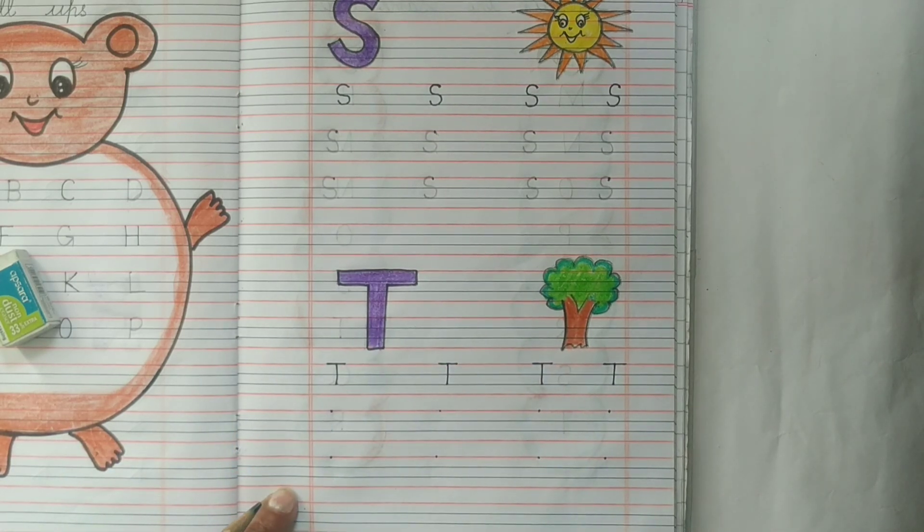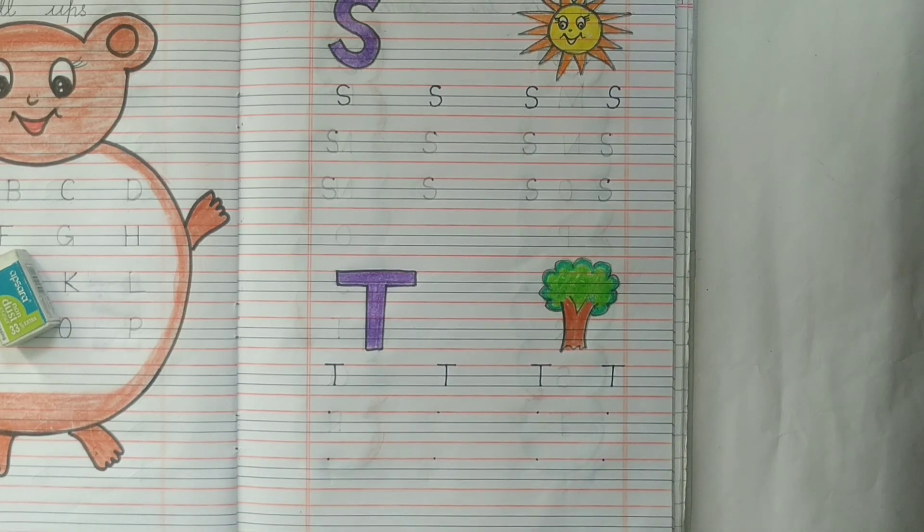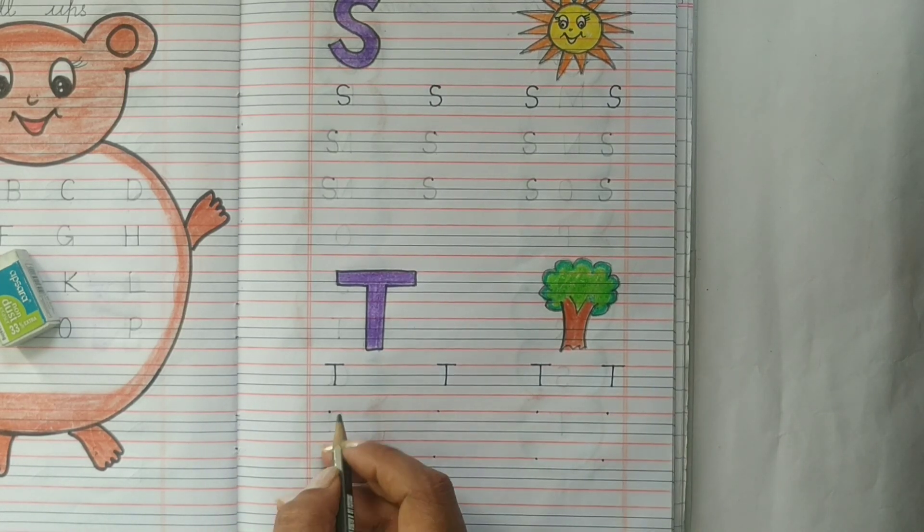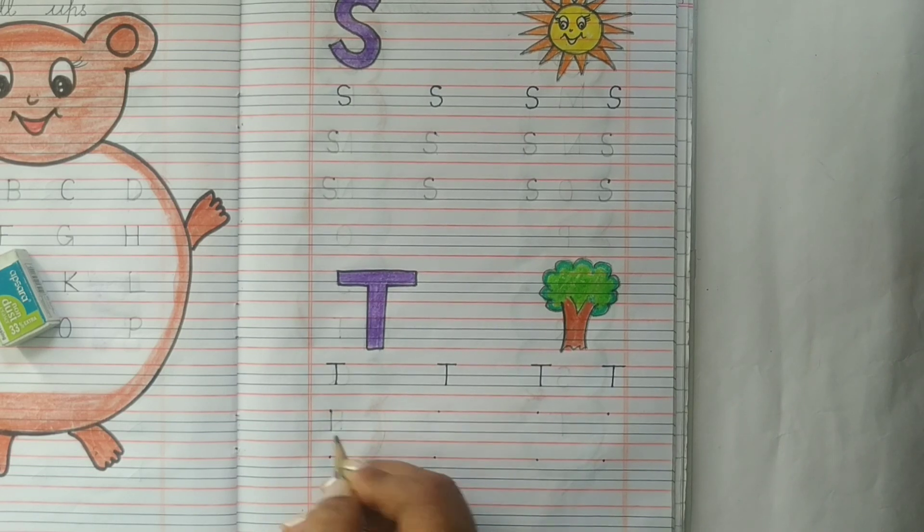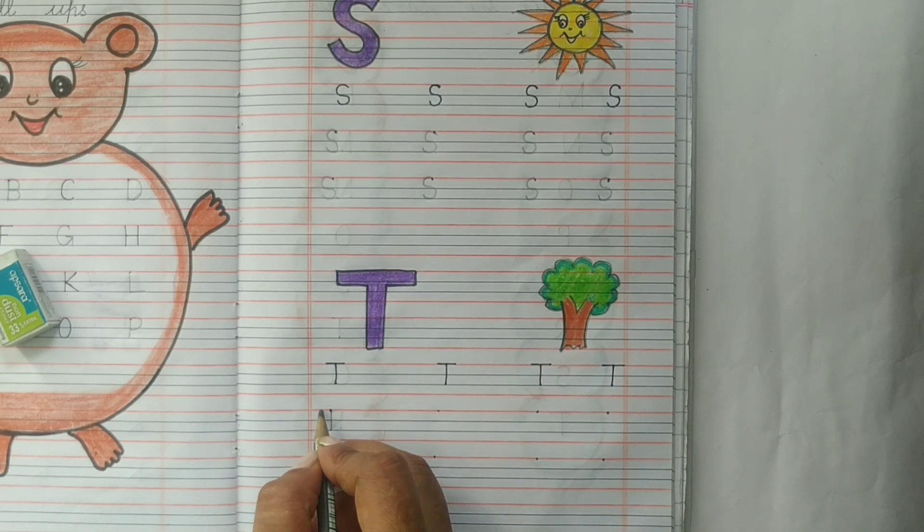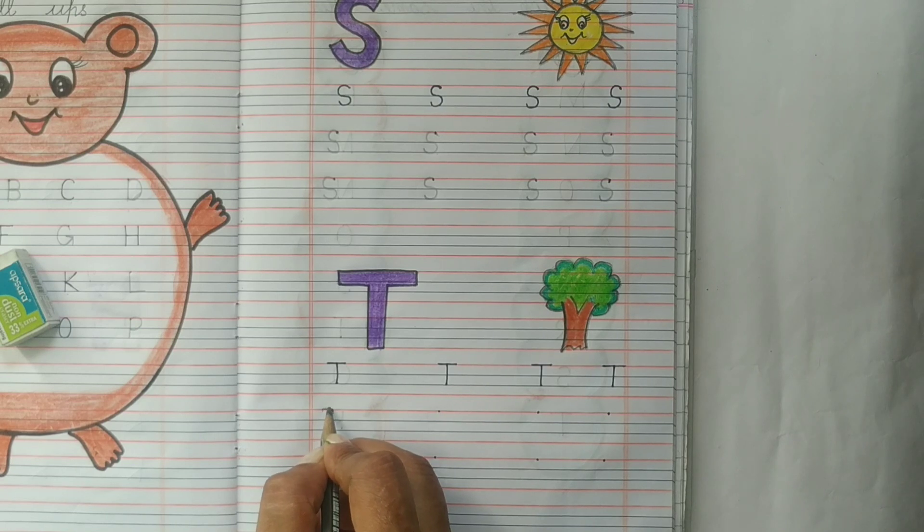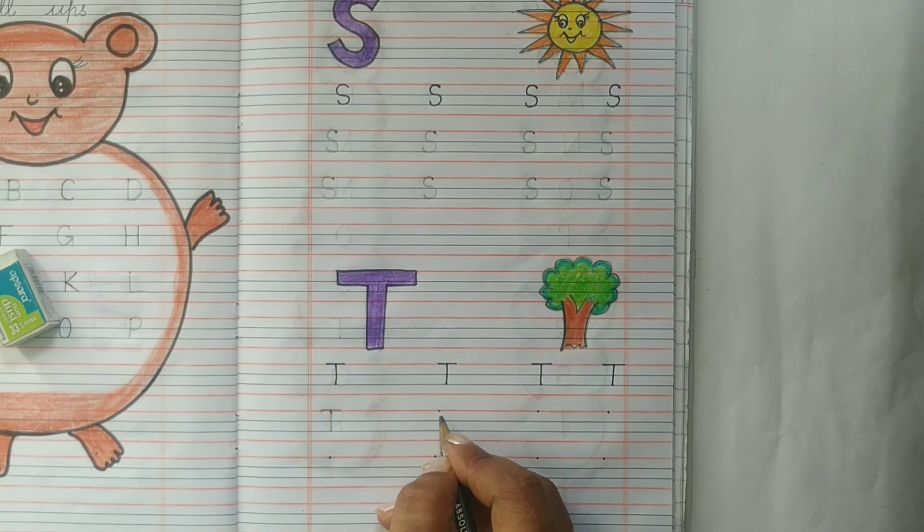Now we will do the writing work of letter T. We will start from the top and draw one standing line down. Then go to the top and draw a sleeping line across. This is letter T.